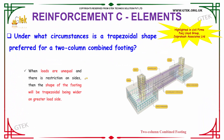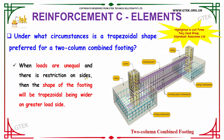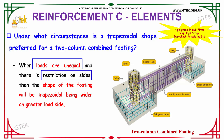Our next question is: under what circumstances is a trapezoidal shape preferred for a two-column combined footing? When the loads are unequal and there is a restriction on the sides, the shape of the footing will be trapezoidal, being wider and greater on the heavier load side.